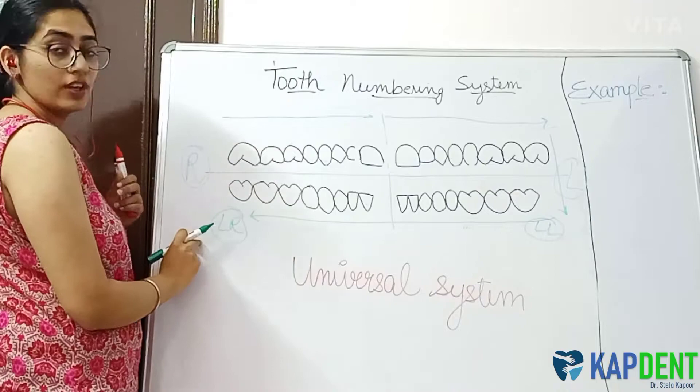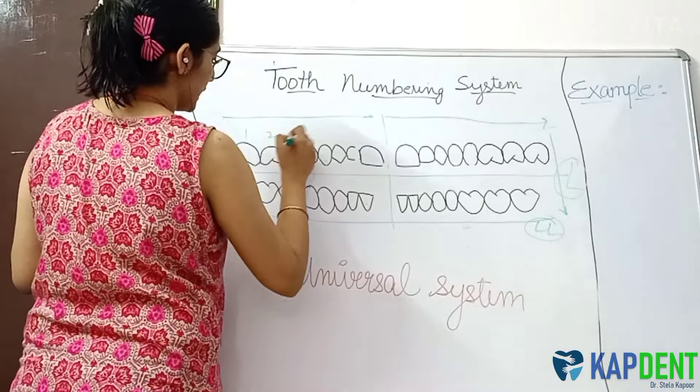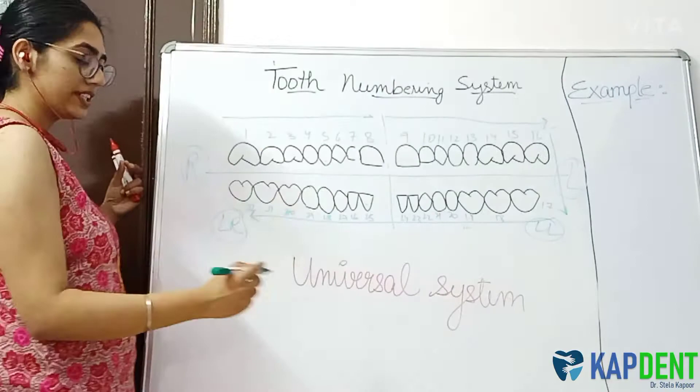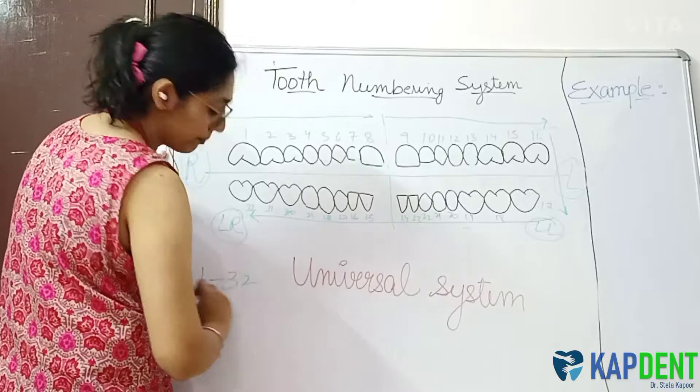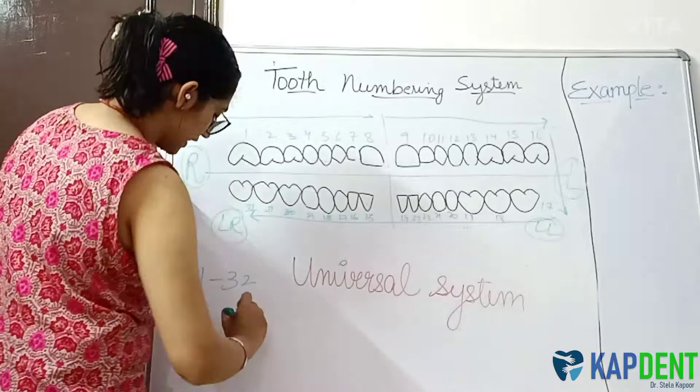Each and every tooth has its own unique number, so numbering starts from 1 and goes all the way to 32 for the complete set of permanent teeth. In the case of primary dentition, where we have only five teeth in each quadrant, the direction remains the same, but alphabets are used from A to T. This is your universal system.